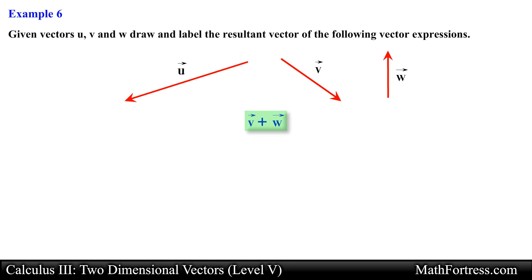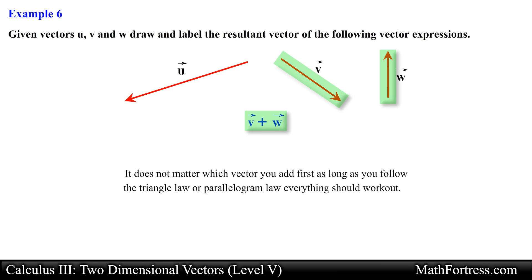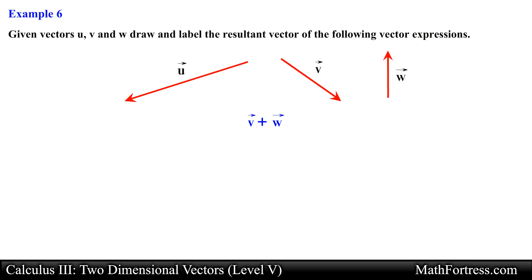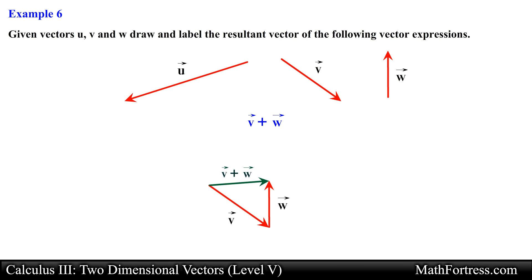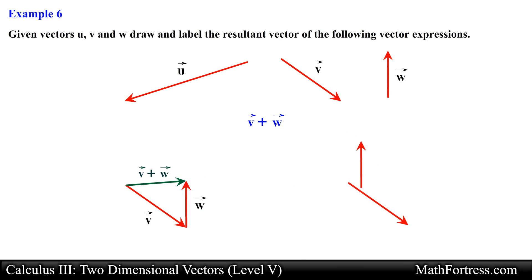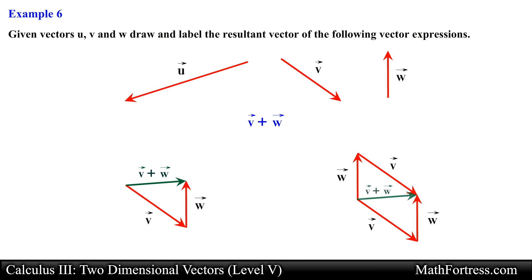Here we are asked to find the resultant vector when we add vector V and vector W. Keep in mind that it really doesn't matter which vector you add first, as long as you follow the triangle law or parallelogram law everything should work out. Using the triangle law we obtain the resultant vector, and using the parallelogram law we obtain the same exact resultant vector.